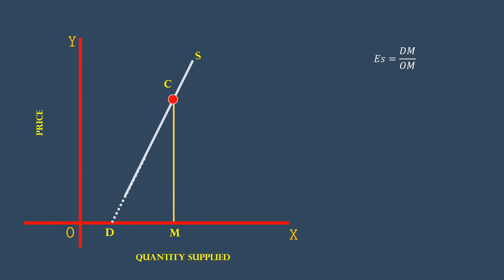Let us use logical reasoning to decide the value of elasticity. In the present case, the length of DM is less than OM. Hence, the elasticity value must be less than 1. Our conclusion is, if DM is less than OM, supply is relatively inelastic.